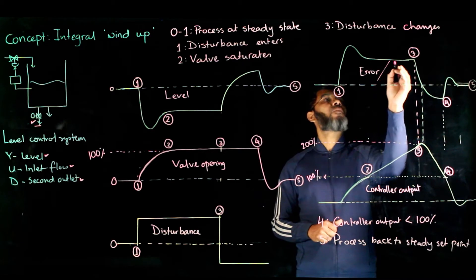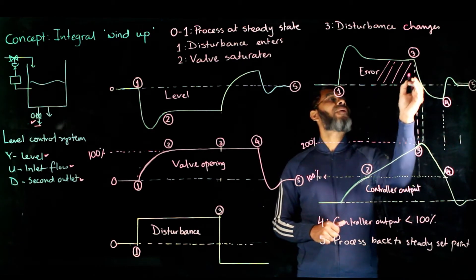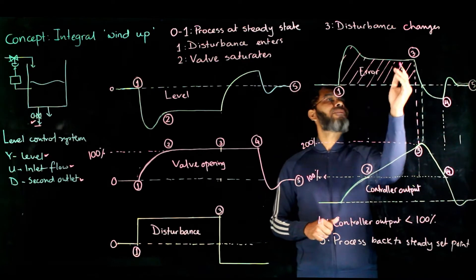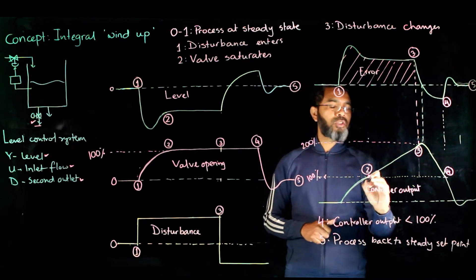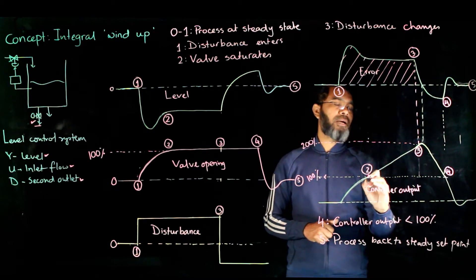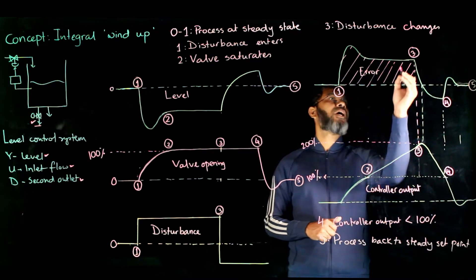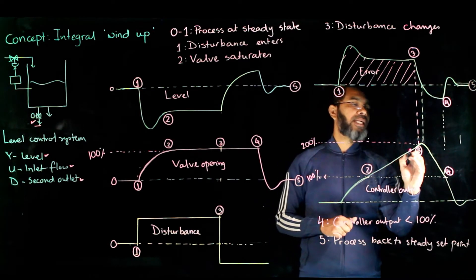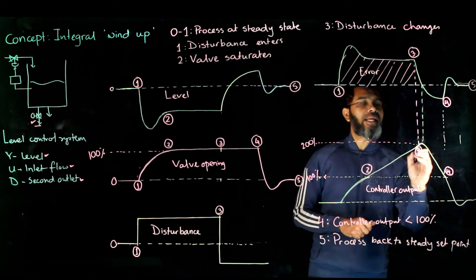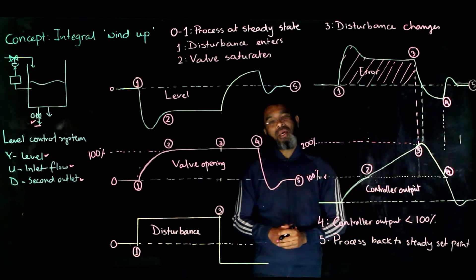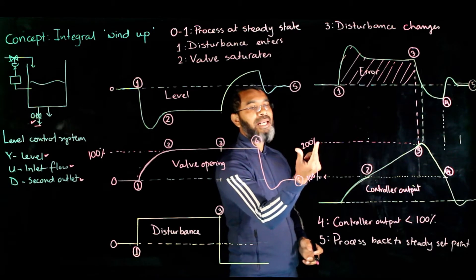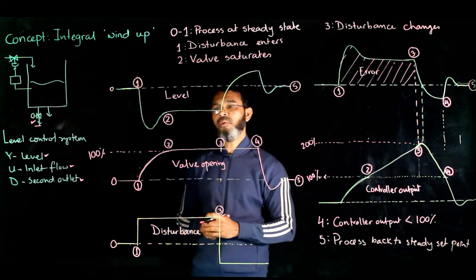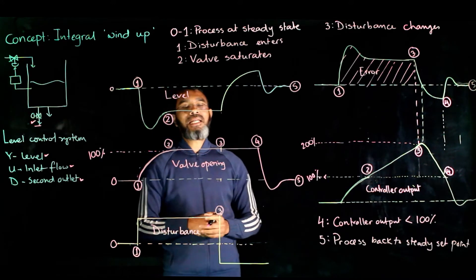The integral action in the controller computes output as the area under the error curve, and this area keeps increasing because of the persistent error. The control action is being calculated beyond 100% and keeps increasing — due to the integral action it rises continuously, reaching say 200%. This is not practically realizable, but the controller output remains at that theoretical value while the valve is still saturated at 100% open.